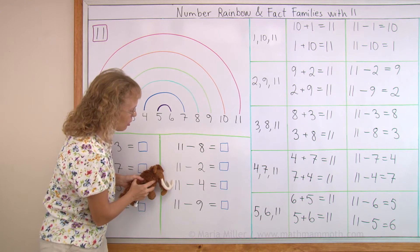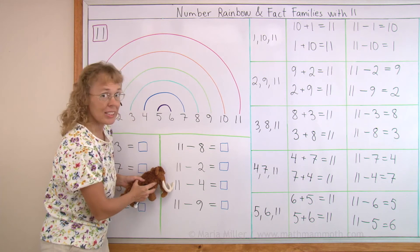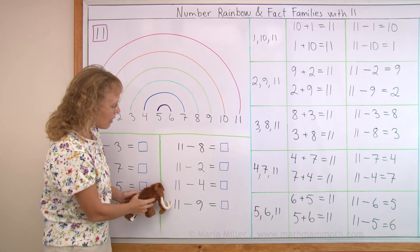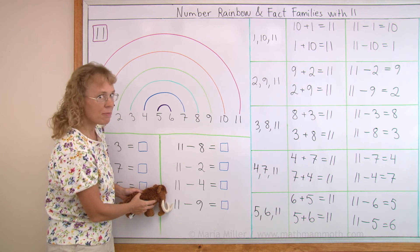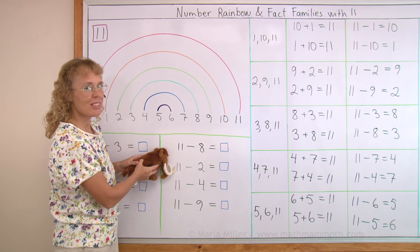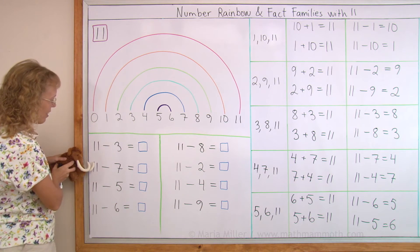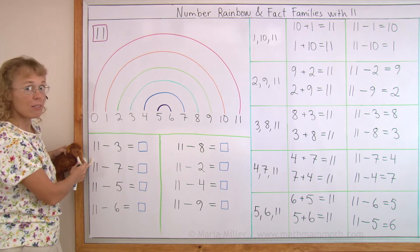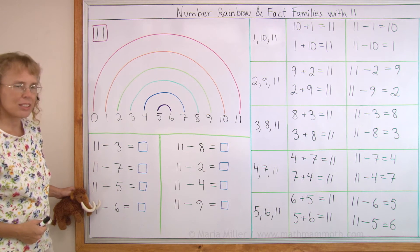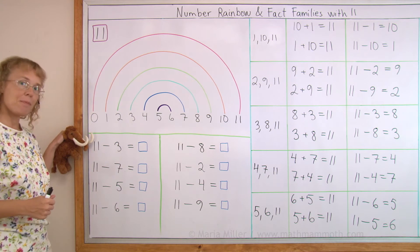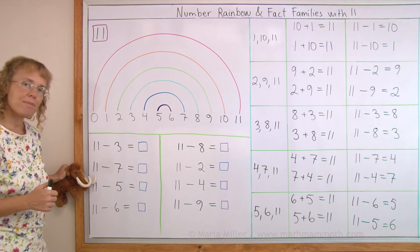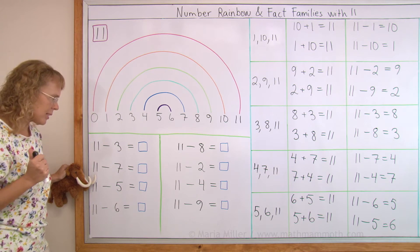11 minus 4? 7. 11 minus 8? 3. 11 minus 9? 2. 11 minus 2? 9. 11 minus 7? 4. 11 minus 6? That's 5. 11 minus 3? 8. 11 minus 5? 6.